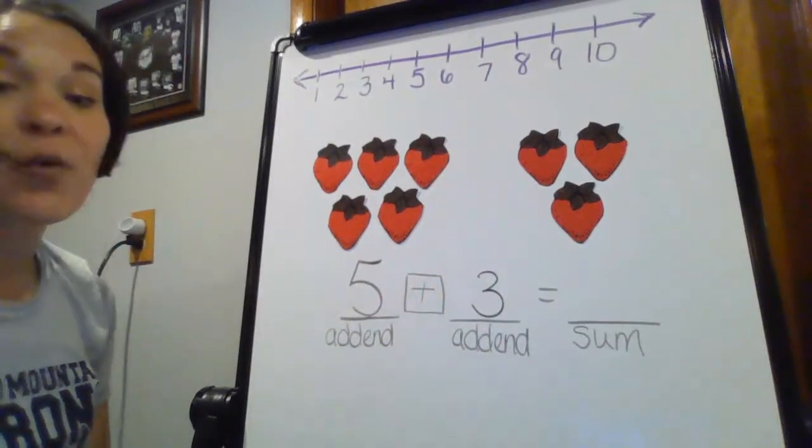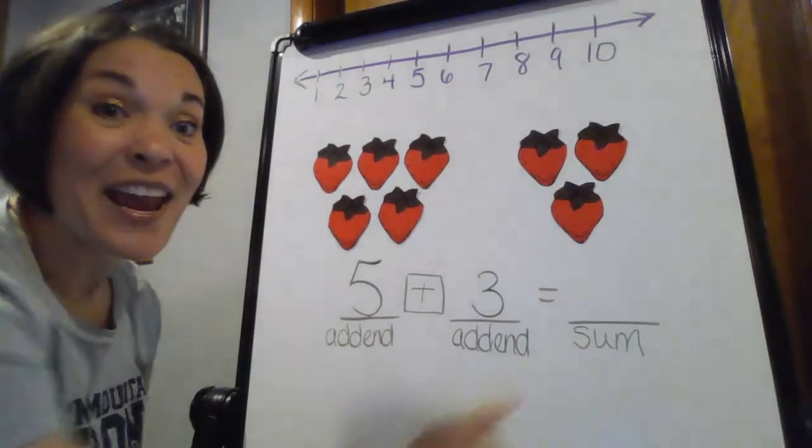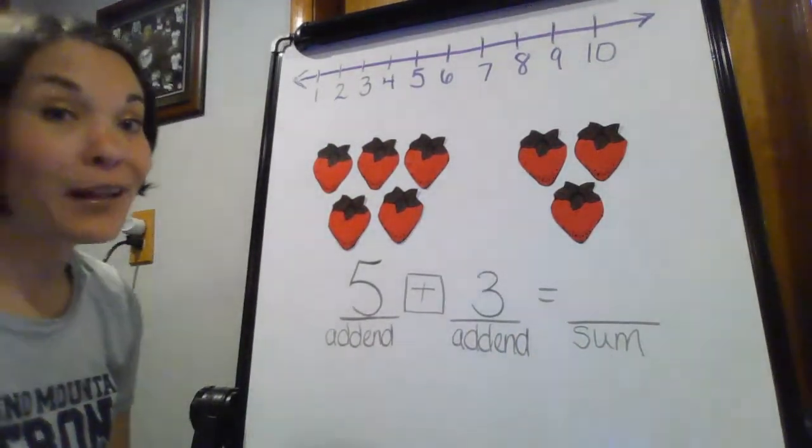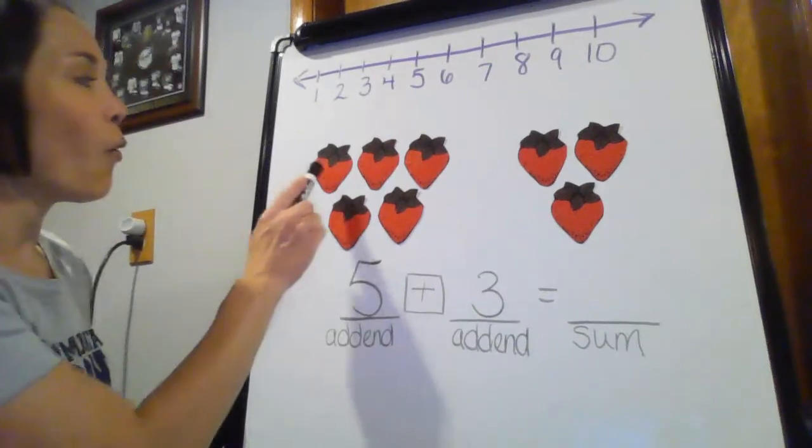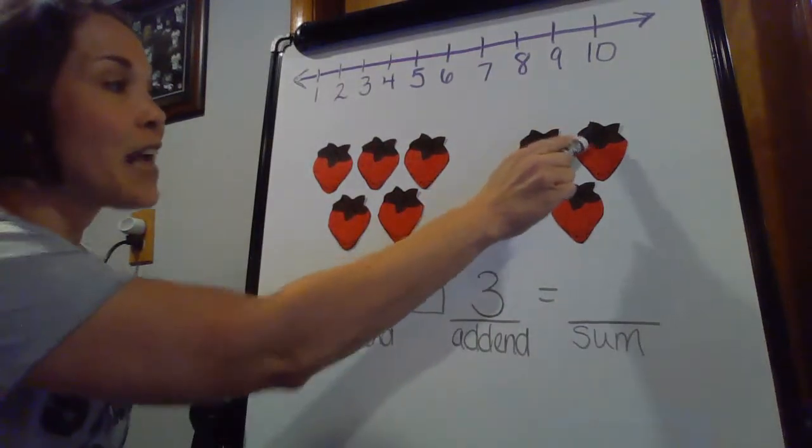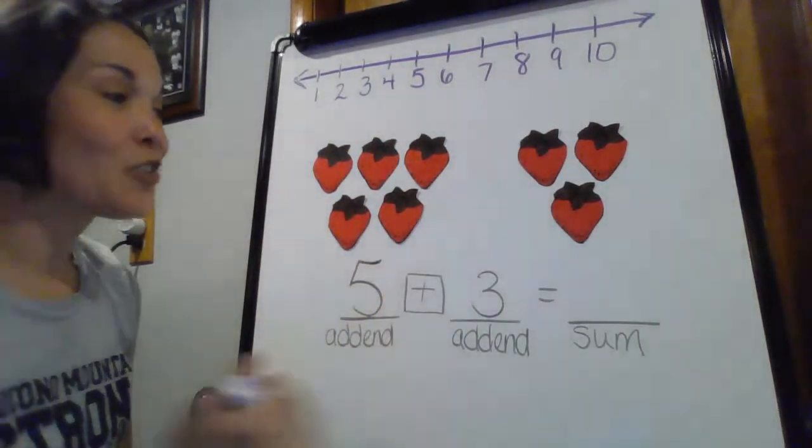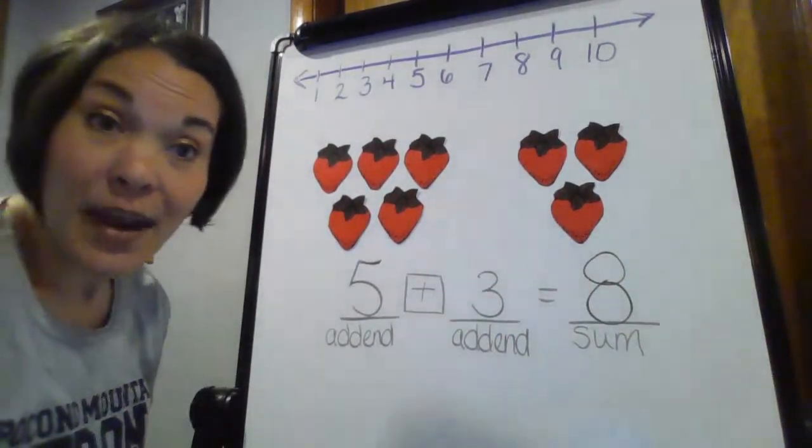Now, what am I going to do to find my sum, to find my answer? So, let's do the easy peasy way. Let's count up all these pictures. One, two, three, four, five, six, seven, eight. So, my sum, my answer is going to be eight.